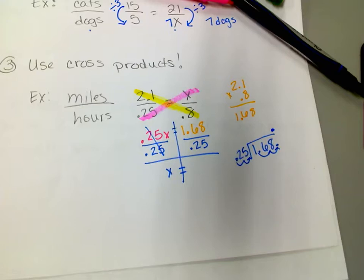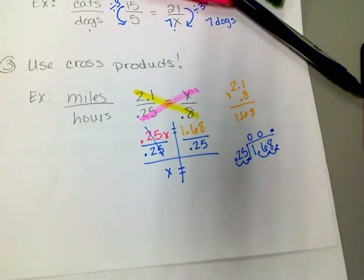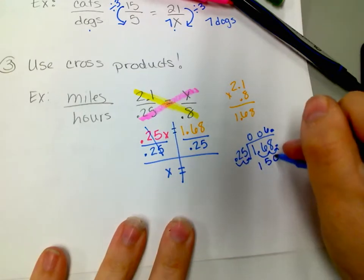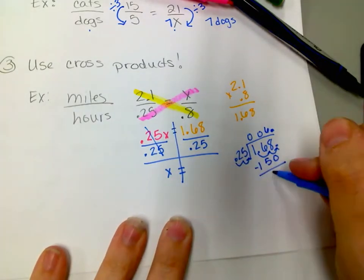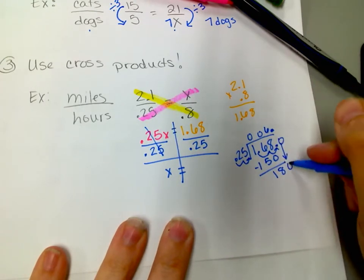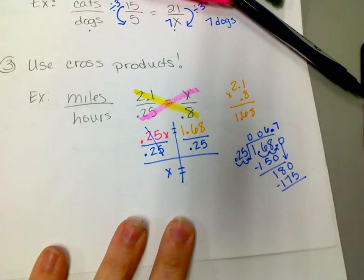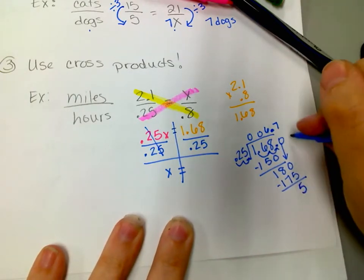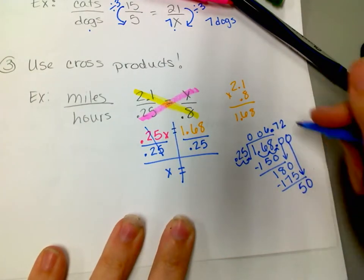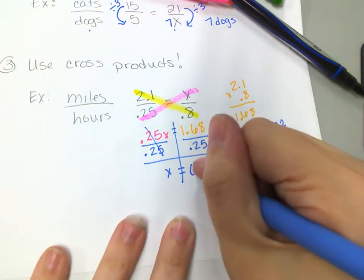Okay, so now 25 into 168. 25 does not go into 1 or 16, it goes into 168. Think of quarters, so that would be six times to get $1.50, so 150. Subtract, and I'm going to get 18. So if I have that decimal and I add a zero and bring it down, 180, that's like seven quarters to make $1.75, so 175. Subtract, I'm going to get 5, and add another zero and bring it down, and 25 goes into 50 twice.